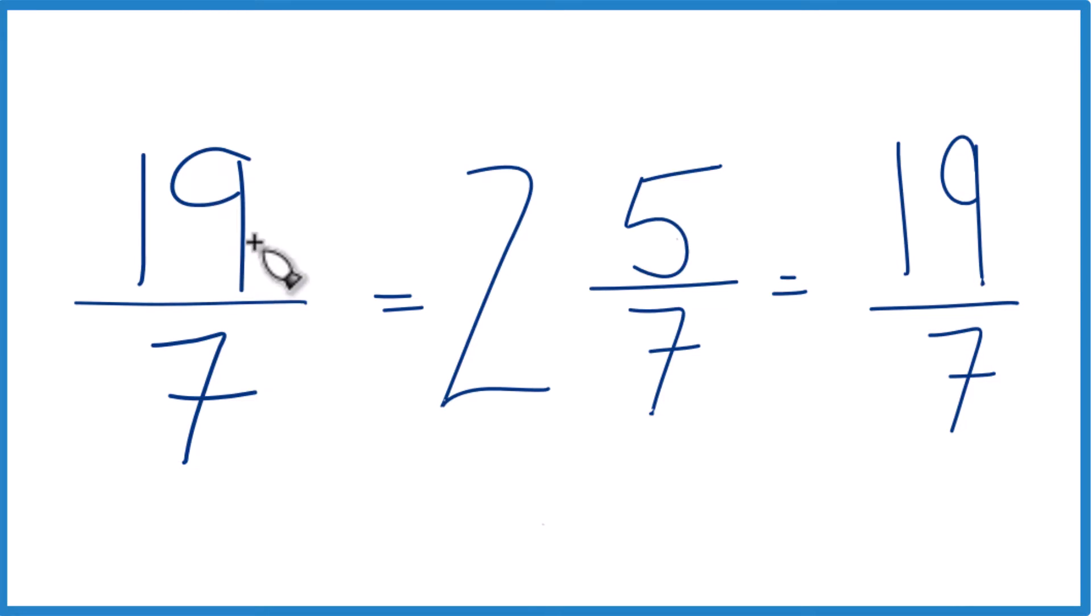So when we convert the improper fraction 19 sevenths to a mixed number, we get 2 and 5 sevenths. This is Dr. B, and thanks for watching.